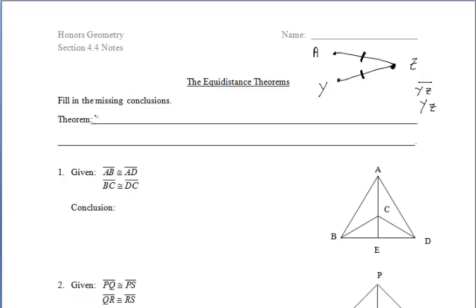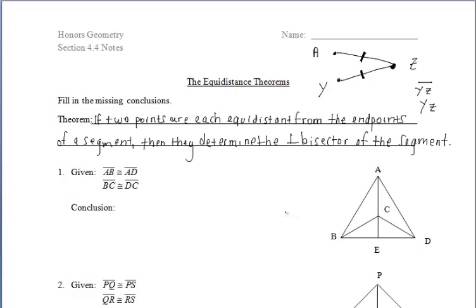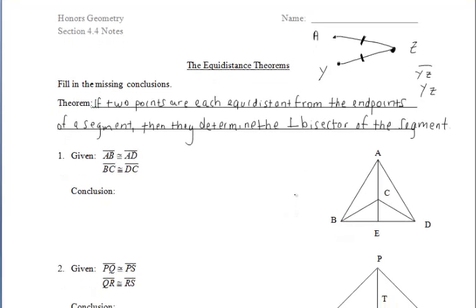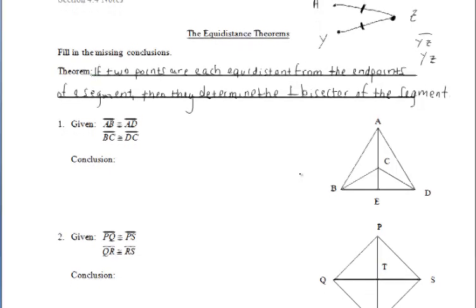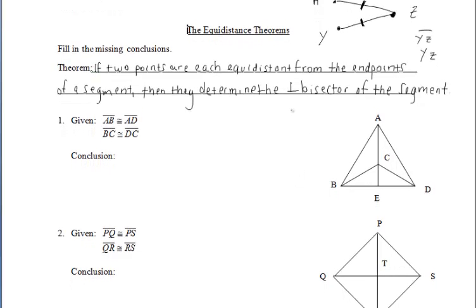The first theorem, which you do have to memorize for your proofs, states that if two points are equidistant from the endpoints of a segment, then they determine the perpendicular bisector of the segment.